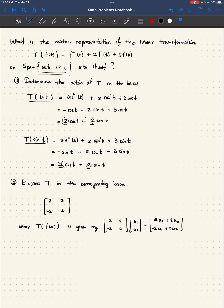Let's interpret, where U1, U2 is the coordinate vector of F of T in the basis cosine of T, sine of T, in that order.